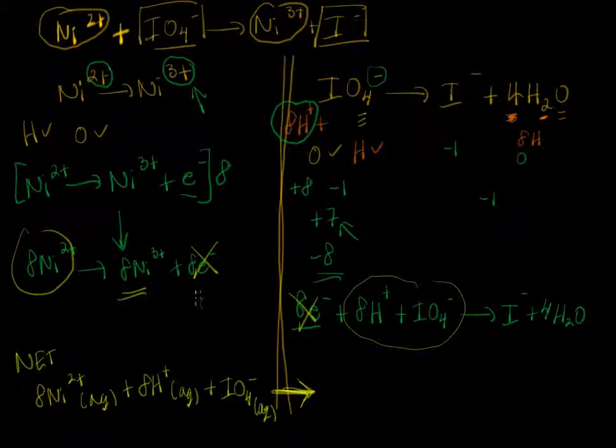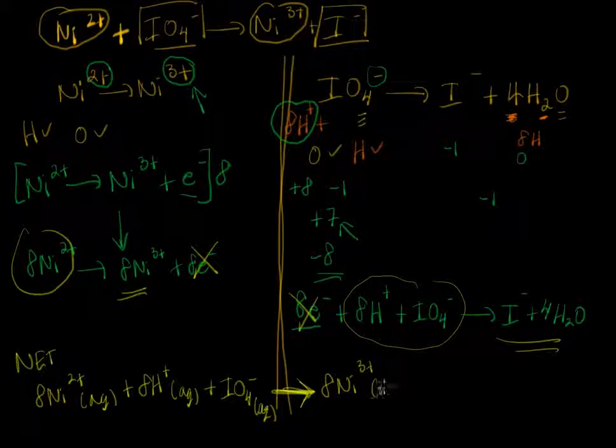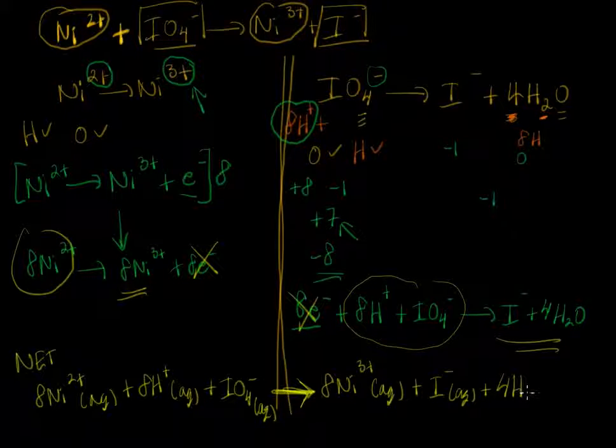Now I'm going to put all of the right hand stuff on the right side of the equation: 8 nickel 3 plus, I minus, and 4 H2Os.